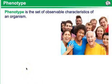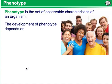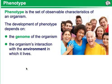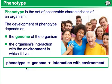Phenotype. A phenotype is the set of observable characteristics of an organism — the physical traits of them. The development of phenotype depends on the genome of the organism and the organism's interaction with the environment in which it lives. So a phenotype equals the genotype, or genome, plus the interaction with the environment.